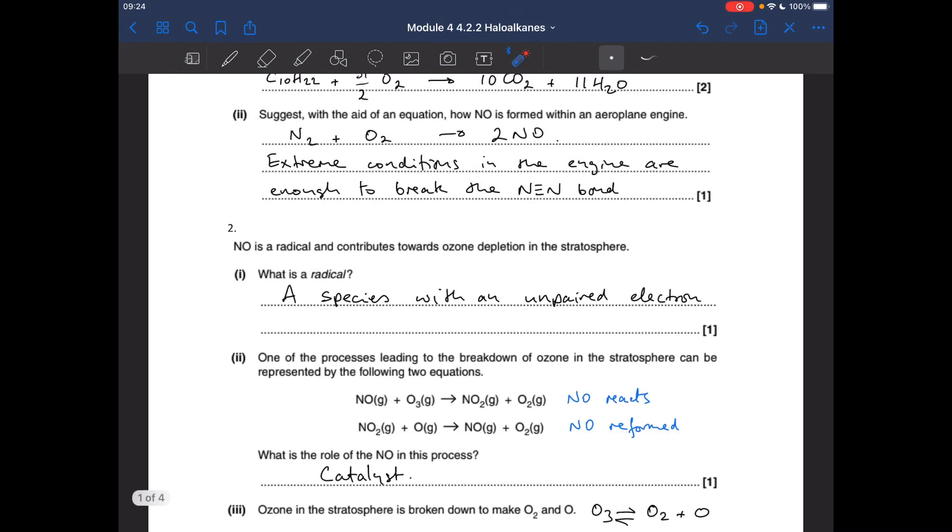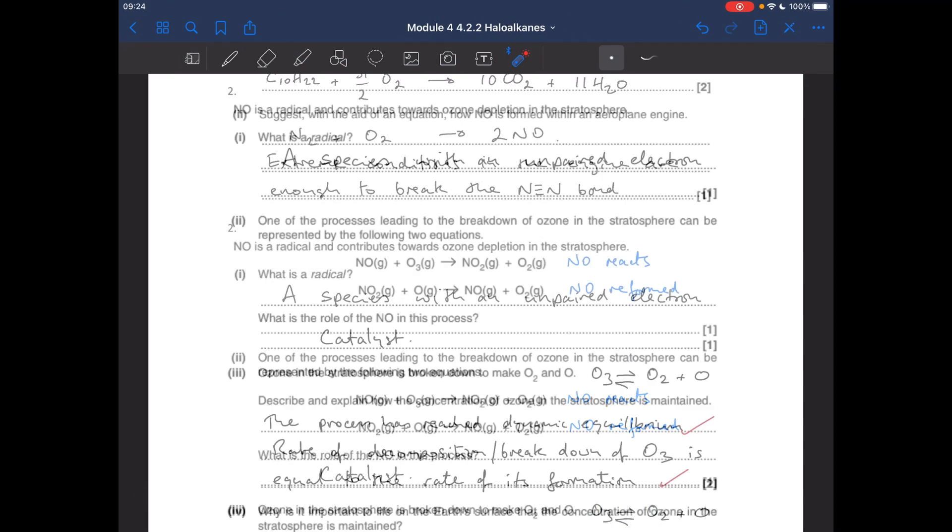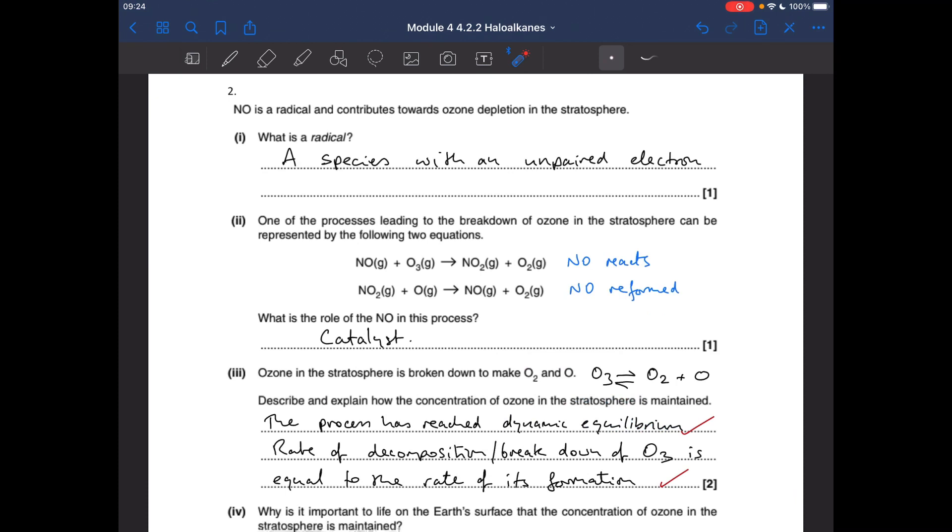Question 2. What's a radical? It's a species with an unpaired electron. Next part of the question looks at one of the processes leading to the breakdown of ozone in the stratosphere. So we've got these two equations.